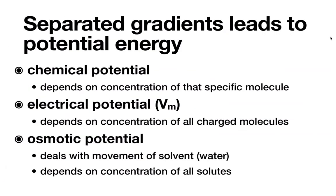There are three main types of potential. Chemical potential depends on the concentration of that specific molecule — each molecule has a chemical potential based on its concentration inside and outside the cell. Electrical potential, sometimes abbreviated BM, depends on the concentration of all charged molecules — all ions, not just the specific one we're looking at. For the electrochemical gradient equation, if the molecule isn't charged, the electrical potential term (Z, the charge on the molecule) equals zero and cancels out.